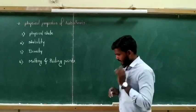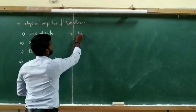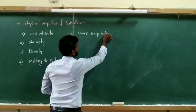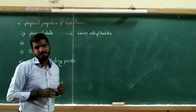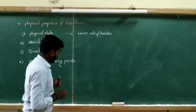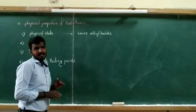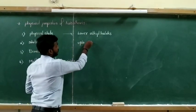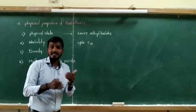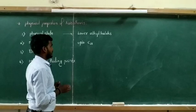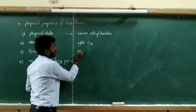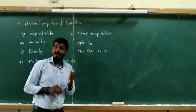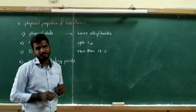Usually, lower haloalkanes — that is, lower alkyl halides — are colorless gases. The other alkyl halides, up to 18 carbons, they are colorless liquids. And beyond that, haloalkanes having more than 18 carbons are colorless solids with a pleasant odor.